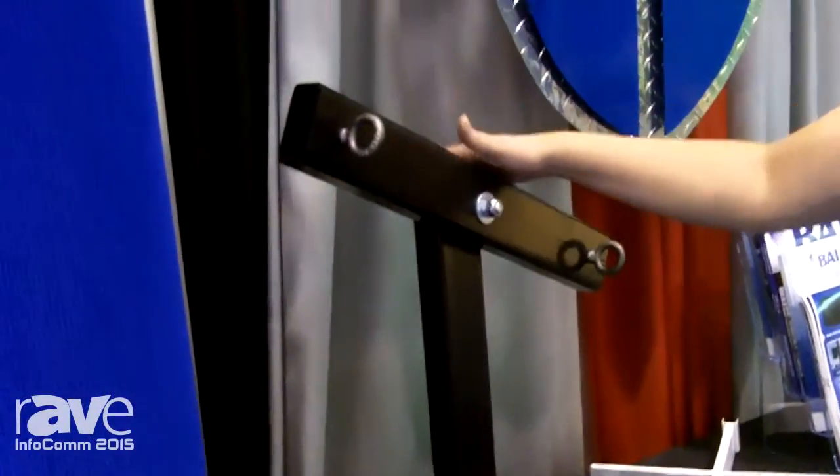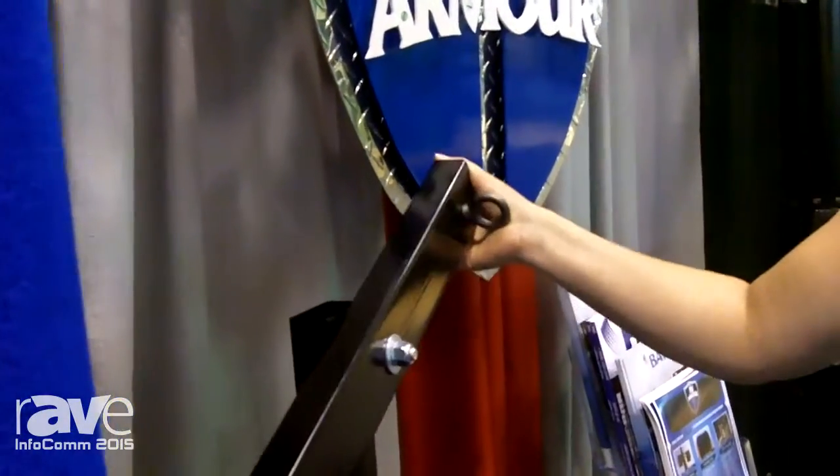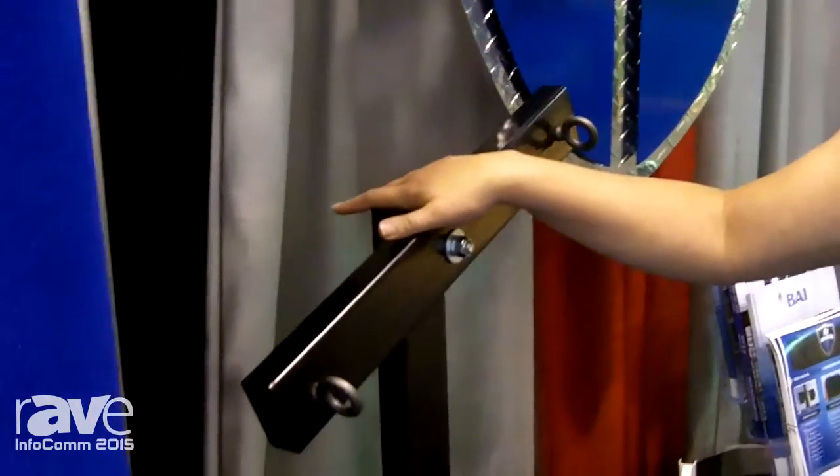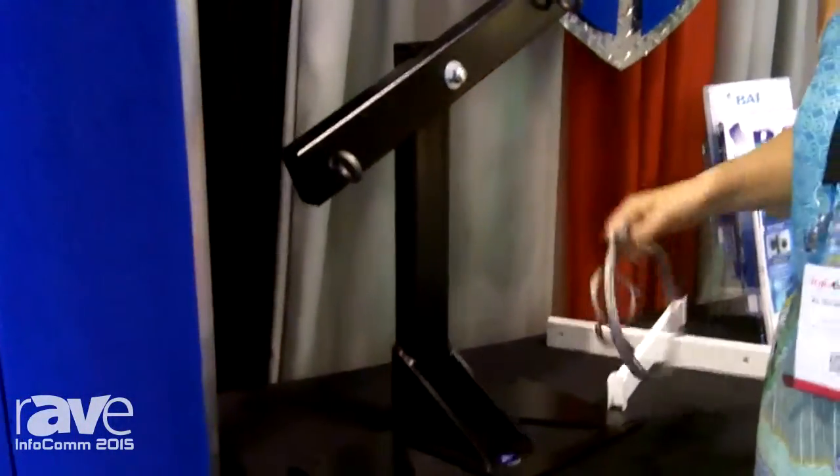You have the option to use a U-bracket directly on the arm, or you can take a rotation piece here and add it to the end if you need angles and aiming and if you need tilt.